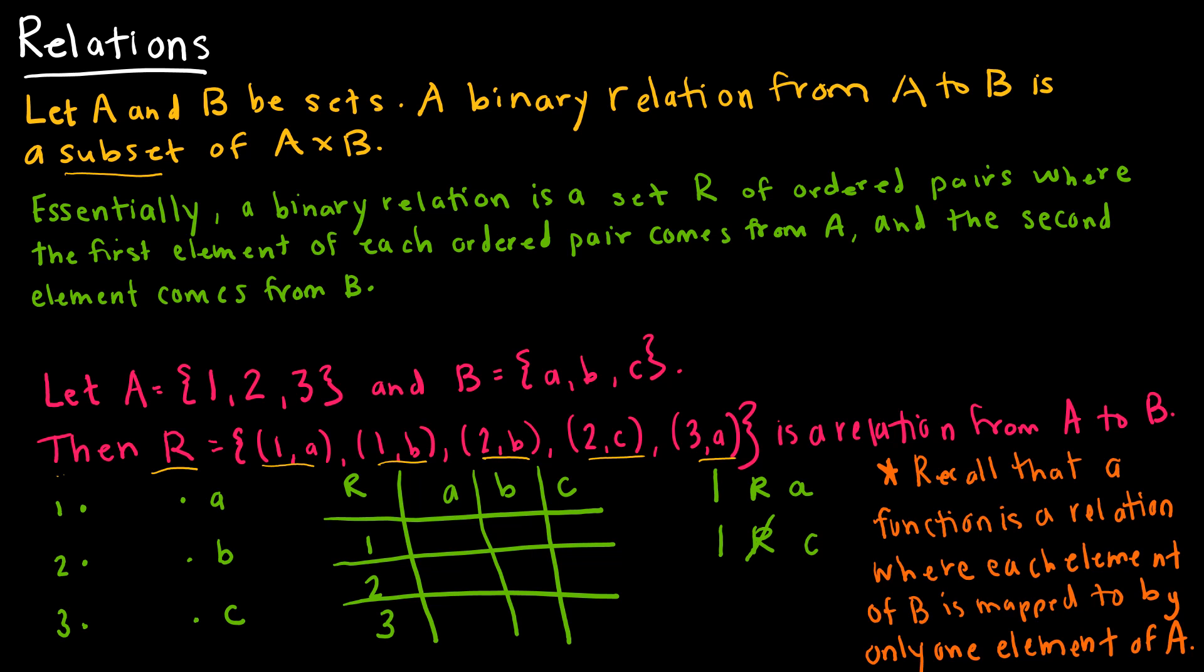There's different ways that you might see this represented. We might say that one maps to a, that one maps to b, that two maps to b, two maps to c, three maps to a. So that's one way you might see this portrayed.